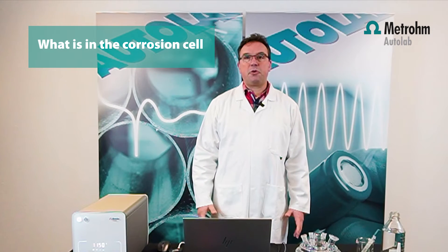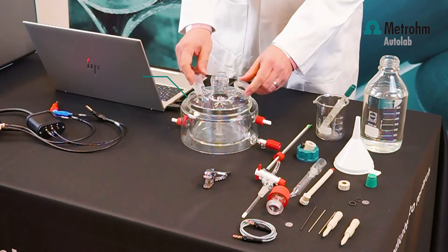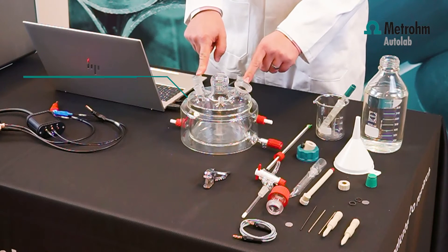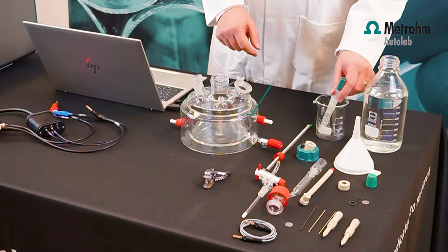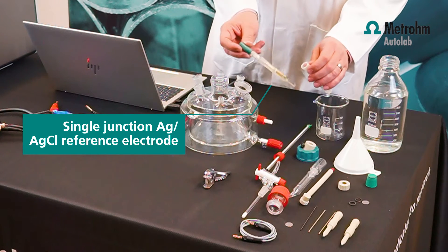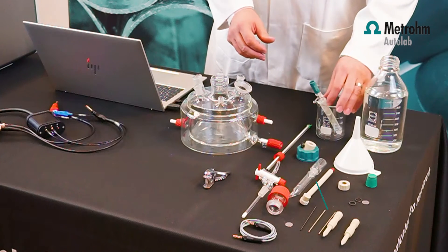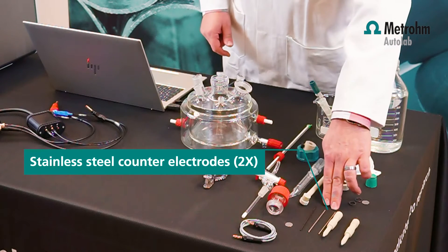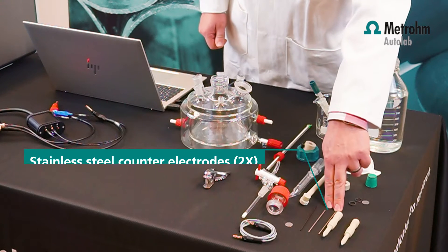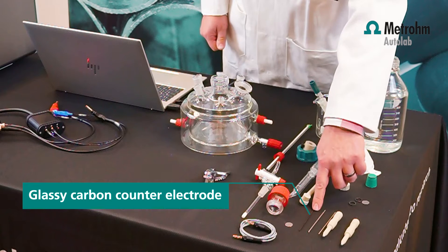First I'm going to show you what's inside the corrosion cell box. We have the one liter corrosion cell, a single junction reference electrode, and two stainless steel counter electrodes. The stainless steel counter electrodes can also be exchanged with glassy carbon.